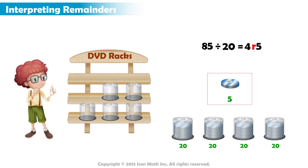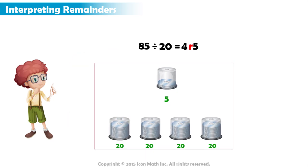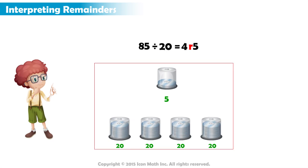The remainder of 5 indicates that Alex will need to buy one more DVD rack to ensure that all 85 DVDs are on racks. Even though the last rack only has 5 DVDs, Alex needs all 5 racks to fit all 85 DVDs.